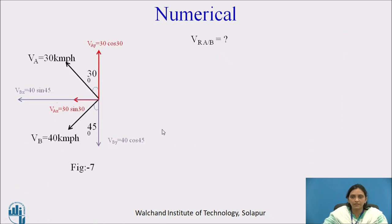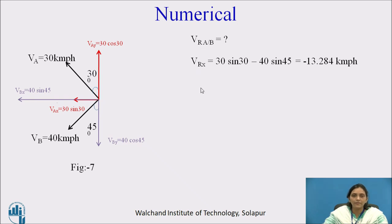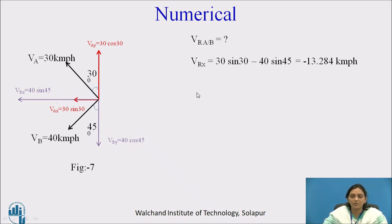We have to determine the relative velocity of A with respect to B. First, calculate the relative velocity component in the x direction. In the x direction, VRx = VAx minus VBx = 30 sin 30 minus 40 sin 45. This gives minus 13.284 kilometers per hour. This is because 40 sin 45 is approximately 28.28 km/h and 30 sin 30 is 15 km/h — the velocity of B is more compared to A, so according to A it is in the reverse direction, giving minus 13.284 km/h.